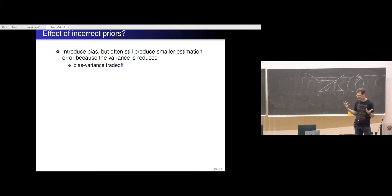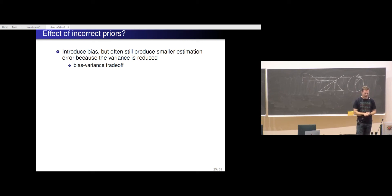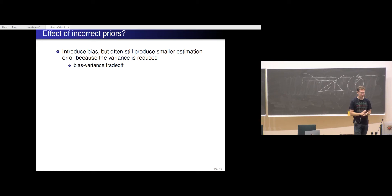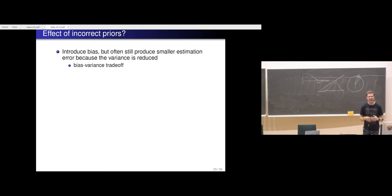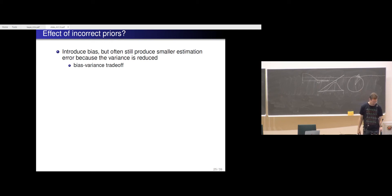A frequently asked question about Bayesian inference is: what if we have an incorrect prior? Priors usually have some effect — we want them to — and in some sense they introduce bias. But they often also reduce uncertainty so much that we get more efficient estimates with smaller estimation errors. Weakly informative priors are usually such that they reduce variance a lot, but since they are weakly informative, they do not bias the results much.